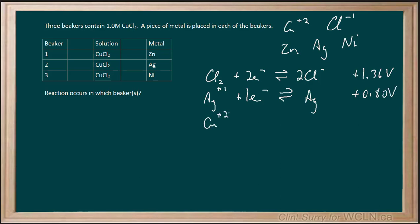Copper plus 2, now be careful because there's also copper plus 1 on the table, but we are dealing with copper plus 2 based on the compound you've got listed, and it is at plus 0.34 volts.